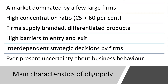A word or two quickly about the key characteristics of oligopoly — important to know these. It tends to be a market dominated by a few firms, with a small number of sellers each having some seller market power. There tends to be a high concentration ratio — the top five firms typically have more than 60% of the market. Each firm supplies branded, differentiated products, and there are assumed to be quite high barriers to entry and exit.